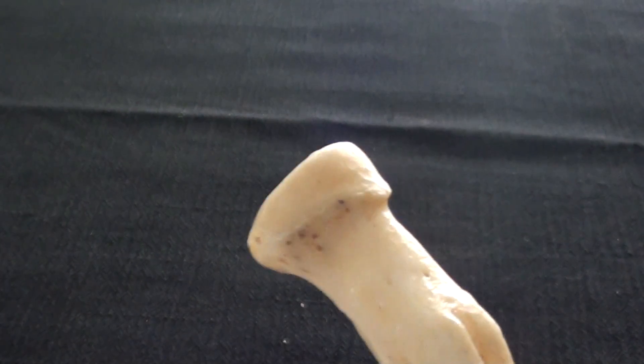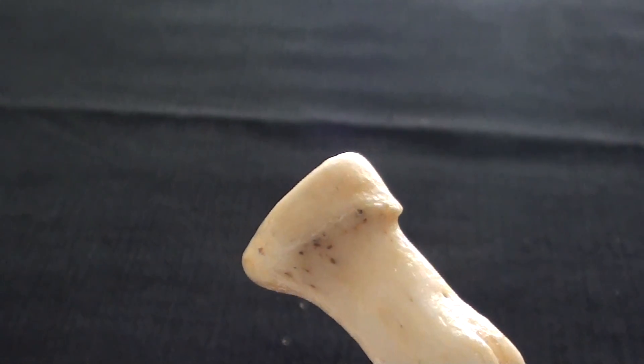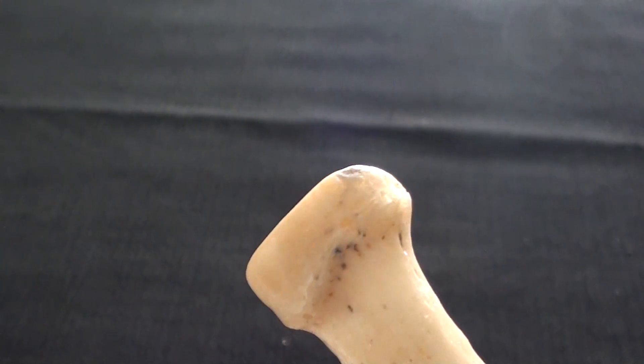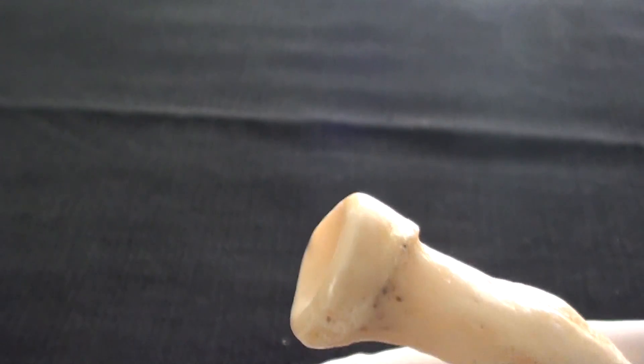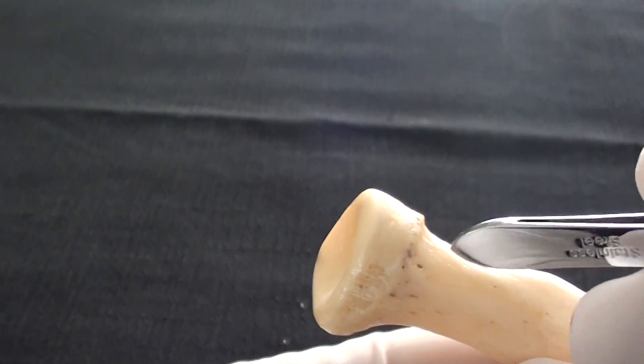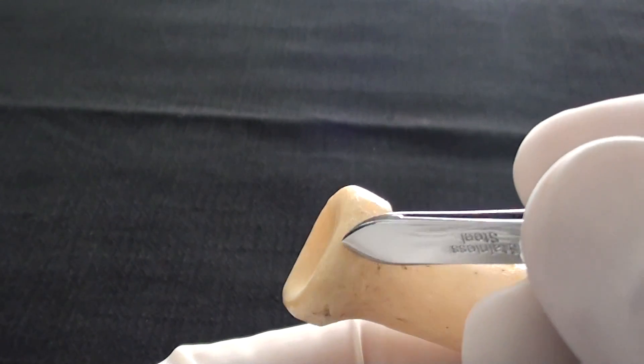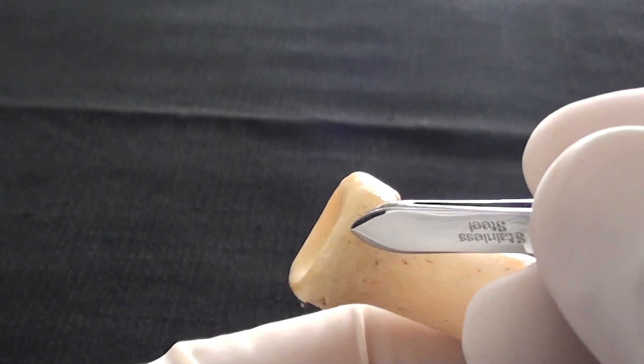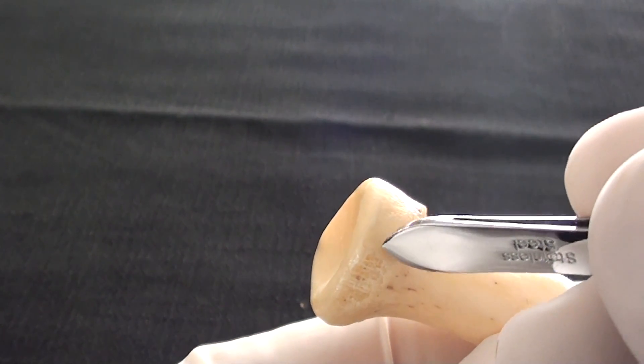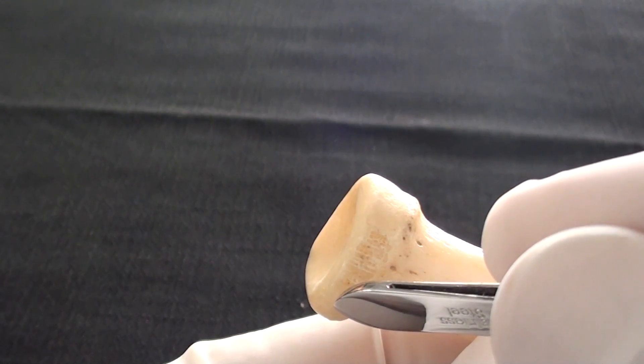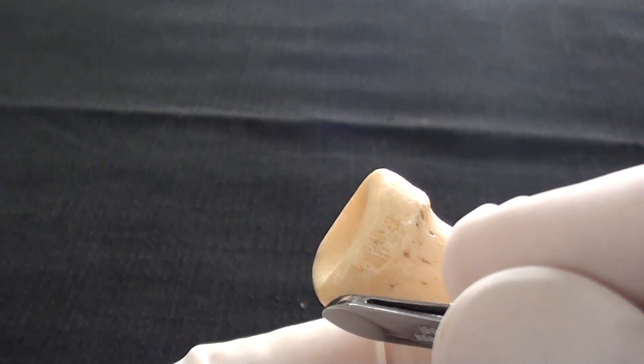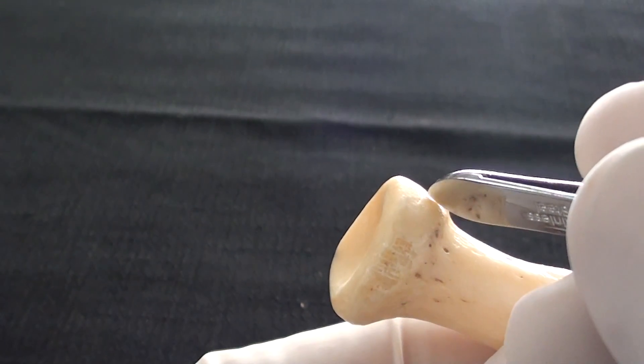The proximal radius is very interestingly shaped. It is almost in the form of a perfect cylinder. On the radial head, we can identify two different articular surfaces. One articular surface, which goes circumferentially and covers 360 degrees of the radial head circumference, is designed to make contact with the radial notch of the ulna.